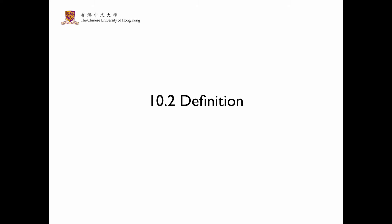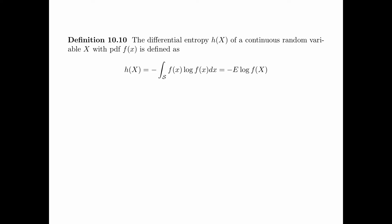In section 10.2, we introduce the differential entropy for continuous random variables. The differential entropy h(x) of a continuous random variable x with PDF f(x) is defined as minus the integral of f(x) log f(x) dx over the support of x. This can be written as minus the expectation of log of f of the random variable x. Note that for differential entropy, we use a small h instead of a capital H.